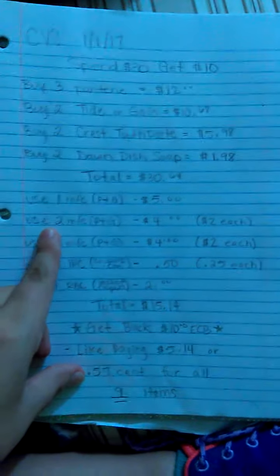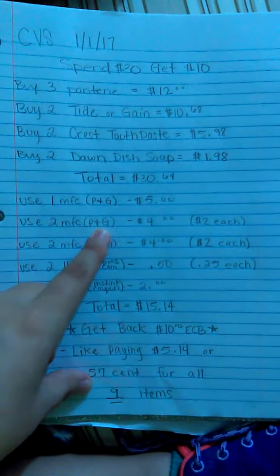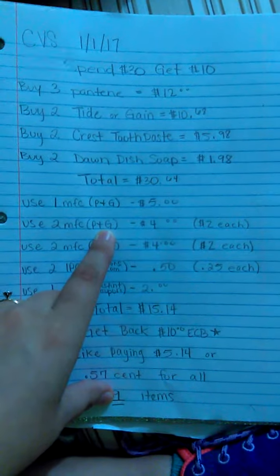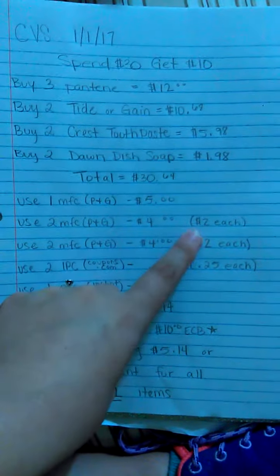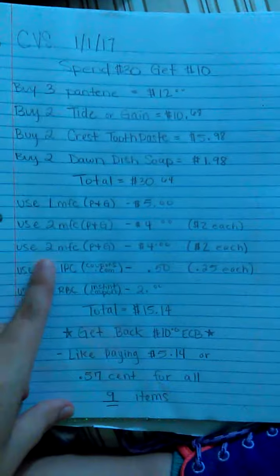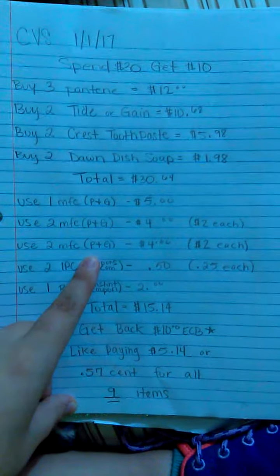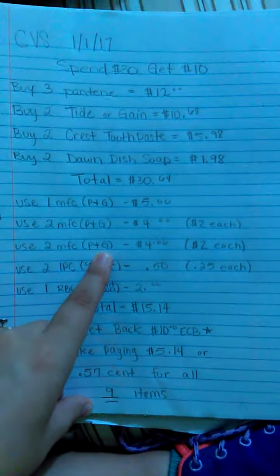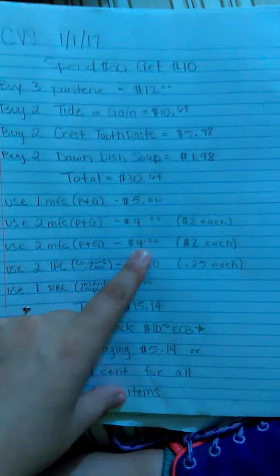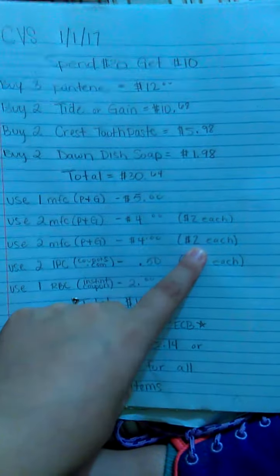You're going to use two manufacturer coupons from the P&G for the Tide or Gain. $4 off. They're $2 each. You're going to use two manufacturer coupons from the P&G for the Crest Toothpaste. So you will get $4 off because they're $2 each.